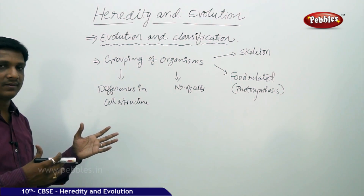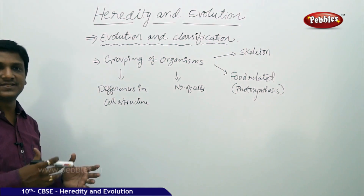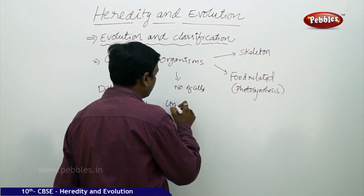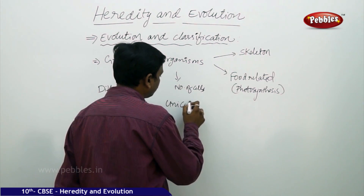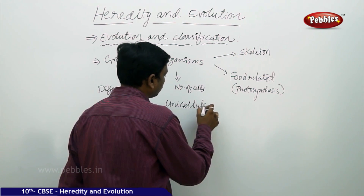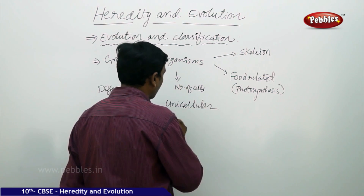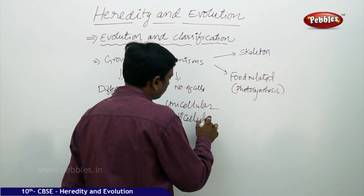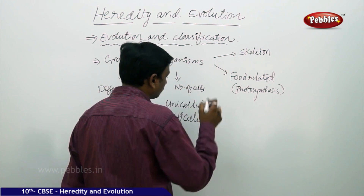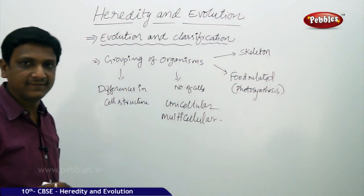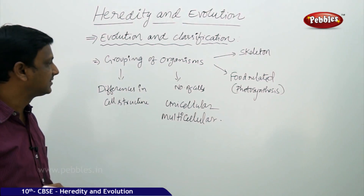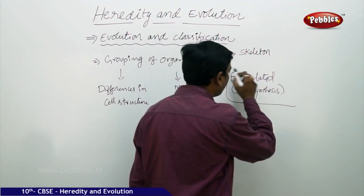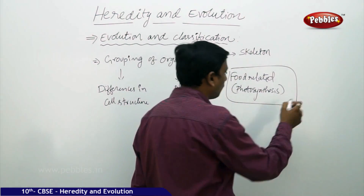There is also a classification based on number of cells: unicellular, having only one cell throughout life, and multicellular, having many cells. And one more characteristic is food-related — photosynthesis.